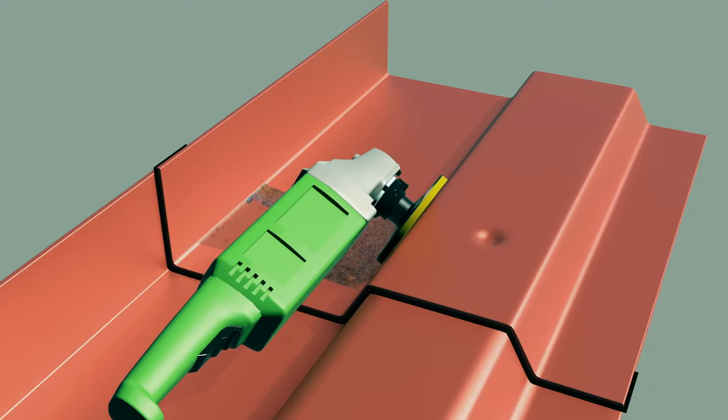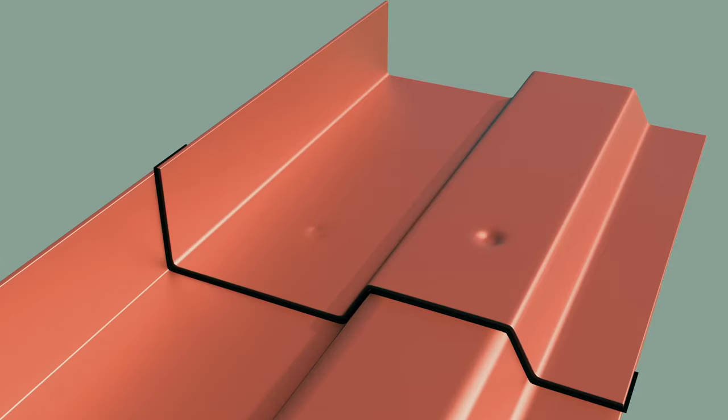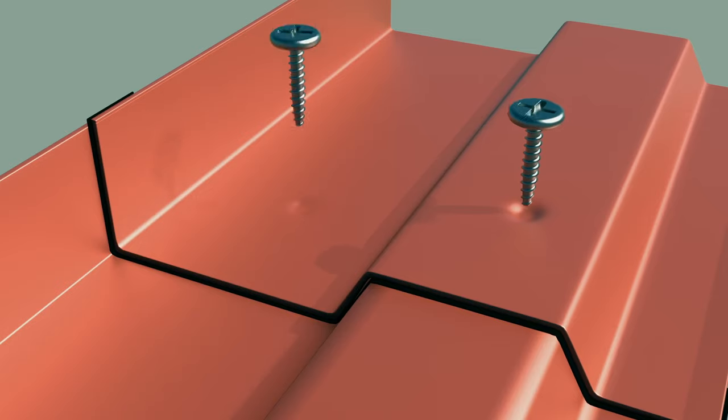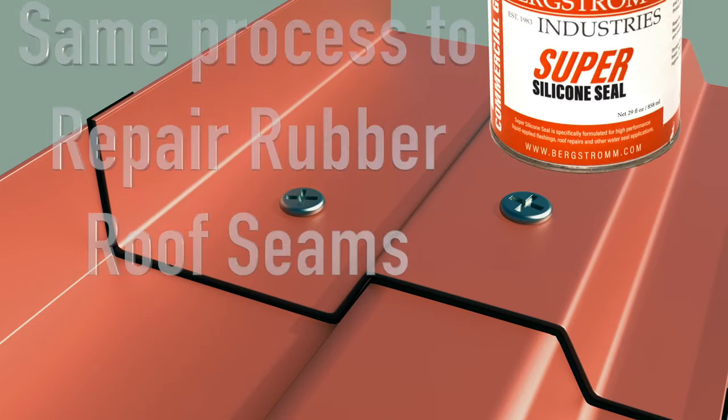But once you get it clean, I would use an angle grinder in this case. Once you get it clean, then you can take panhead fasteners to screw these panels together. You don't need to use the same holes.